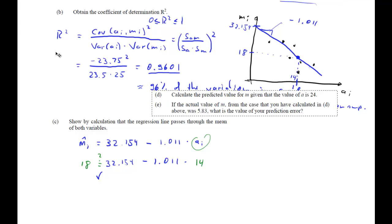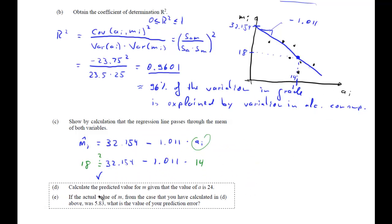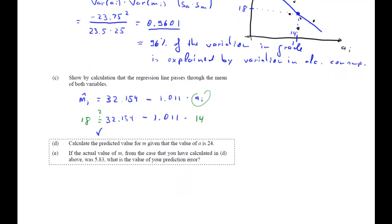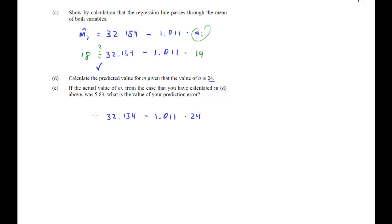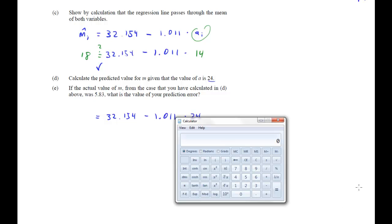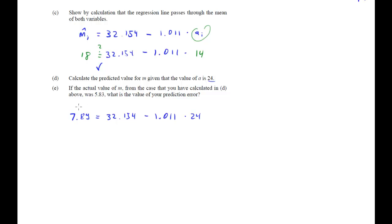We continue with parts d and e. Question d: calculate the predicted value for m given that the value of a is 24. We do exactly the same as before. Our regression line is 32.154 minus 1.011 times a_i, but now we use 24 for a. Calculating: negative 1.011 times 24 plus 32.154 gives us 7.89. So m hat at a equals 24 is 7.89.